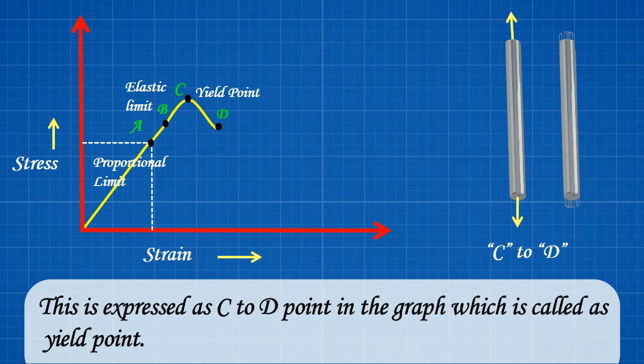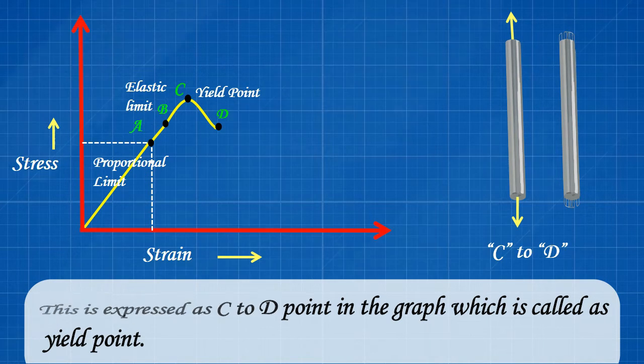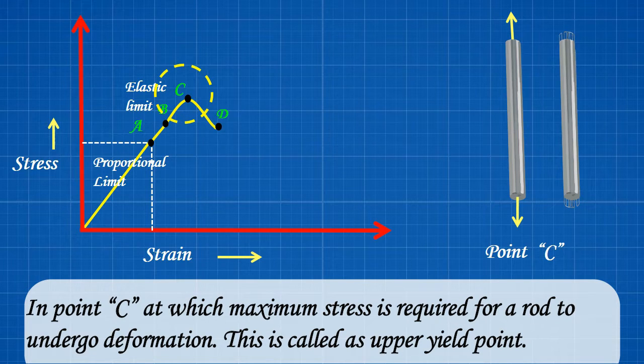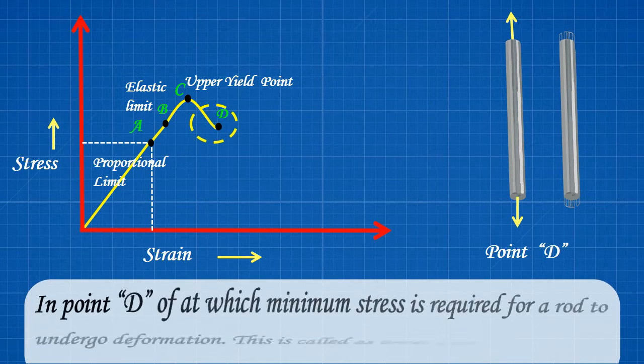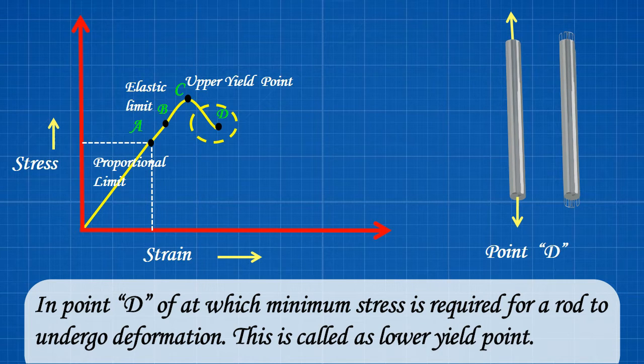This is expressed as C to D point in the graph which is called as yield point. In point C at which maximum stress is required for a rod to undergo deformation, this is called as upper yield point. In point D of at which minimum stress is required for a rod to undergo deformation, this is called as lower yield point.